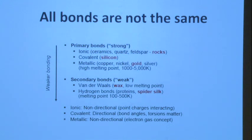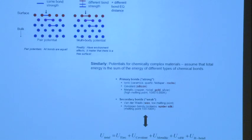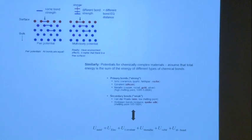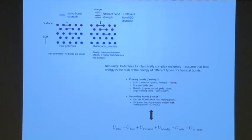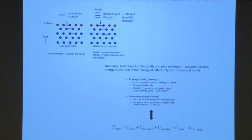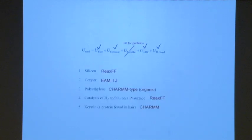The same bond can behave differently depending on the environment — bonds exposed to the surface have different strength compared to those in the bulk. Usually you describe potential energy as the sum of all contributions: metallic, covalent, van der Waals, and so on. For a protein, for example, you still list all of them, but the metallic contribution is zero. Here I've listed some recommended potentials: for silicon, copper, or biological systems like CHARMM — it varies depending on what you're studying.